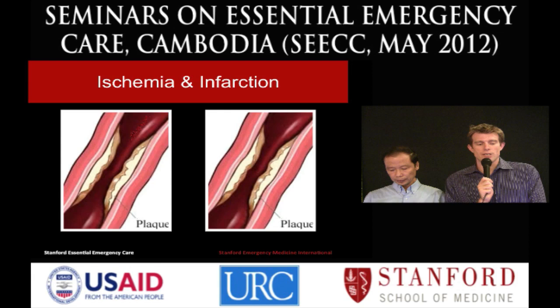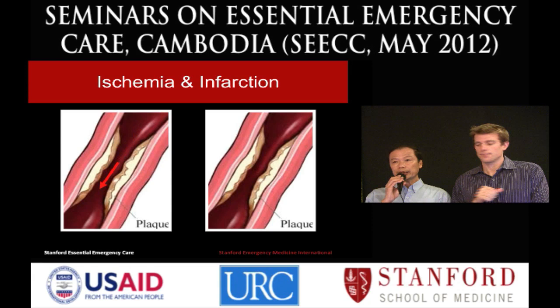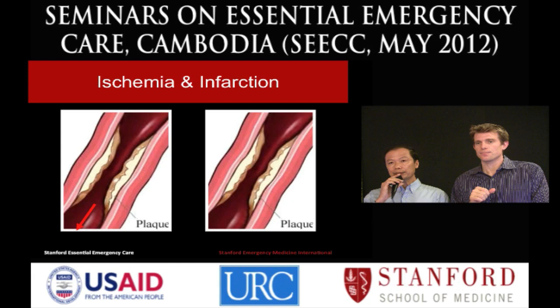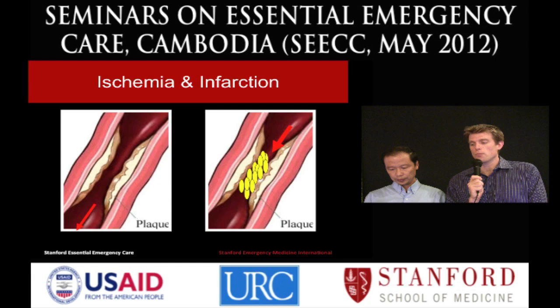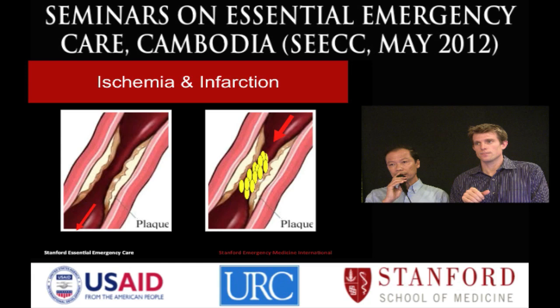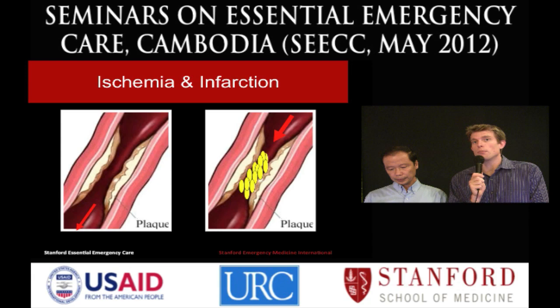Ischemia is when there is not enough blood flow for the muscles. Something — in this case, plaque — is limiting the blood as it goes through the blood vessel. In infarction, there is oftentimes a blood clot that forms with platelets, completely blocking the blood flow. Because there is little or no blood flowing to the muscle, the muscle dies — and we call that infarction.